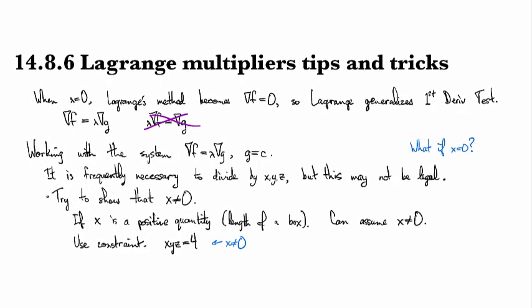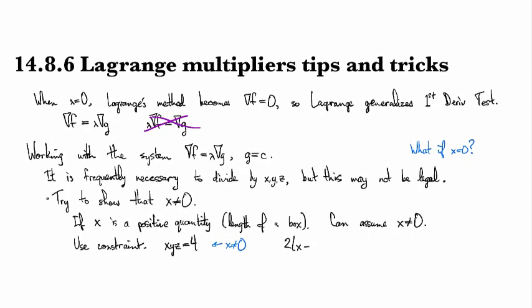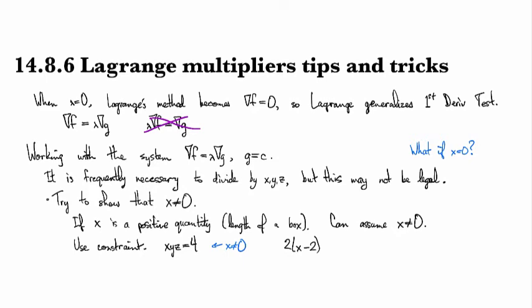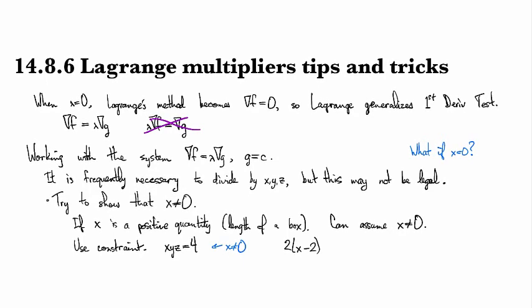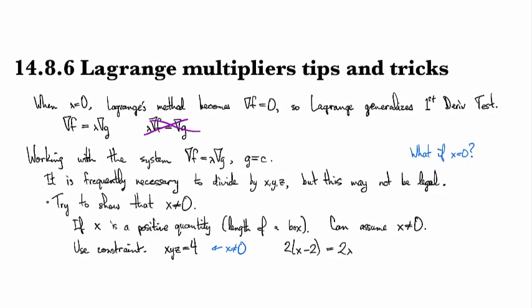And sometimes you'll see other things. Like maybe you have a constraint, like, or one of your equations that pops out from Lagrange's method looks like two times x minus two equals two times lambda x, right?